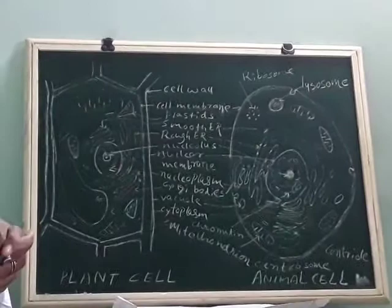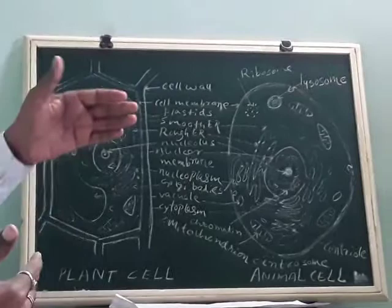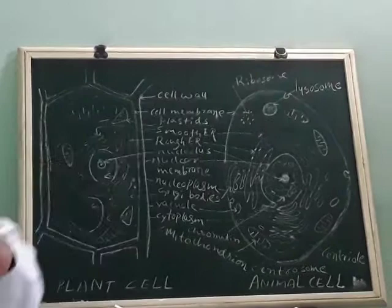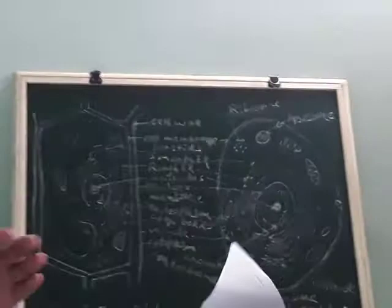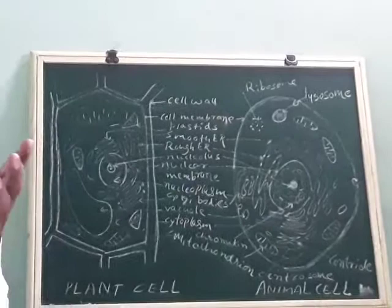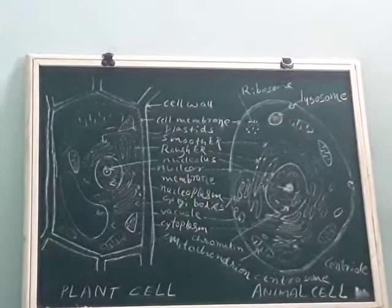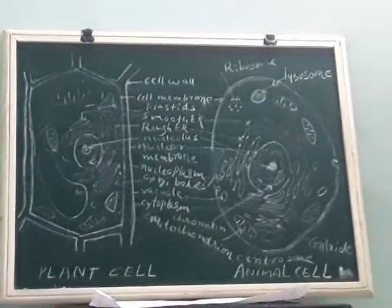A scientist called Robert Leeuwenhoek developed a microscope to observe microbes, because we cannot see microbes with the naked eye. He developed a simple microscope which had only one lens. He tried it by using sunlight, but it was okay, not fully up to the mark.